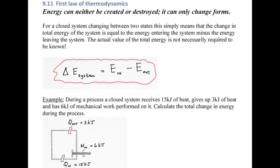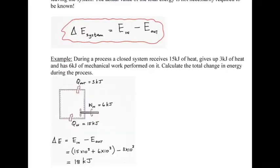Here's an example: during a process, a closed system receives 15 kilojoules of heat, gives up 3 kilojoules of heat, and has 6 kilojoules of mechanical work performed on it. Calculate the total change in energy. According to the first law, change in energy equals energy in minus energy out. Energy in: 15 kilojoules of heat plus 6 kilojoules of work done. Energy out: 3 kilojoules. This leaves a total change of 18 kilojoules positive.